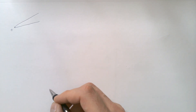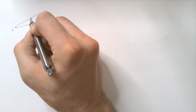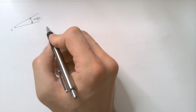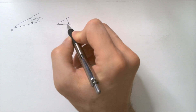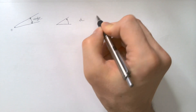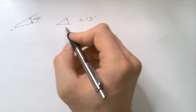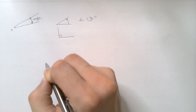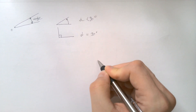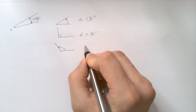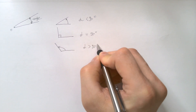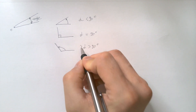Imagine you have an origin O, and from this origin you have two radial arms going out. Then this is what we call the angle between these two arms. This angle can be what we call an acute angle, if the angle, let's call it alpha, is below 90 degrees. This angle can be the so-called right angle if alpha is exactly 90 degrees. The angle can be what we call obtuse if alpha is larger than 90 degrees but smaller than 180 degrees.